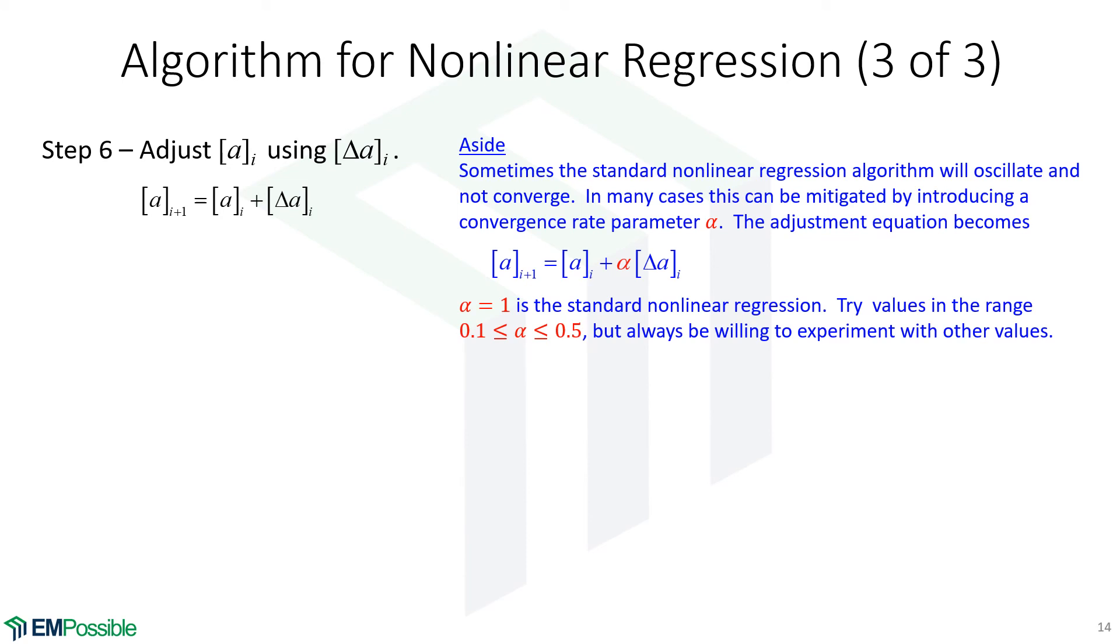I'll mention a sort of an aside that nonlinear regression can be a touchy method. It can suffer from convergence issues. It can even oscillate and be unstable. So I might even say it should be standard practice to introduce some sort of convergence rate parameter alpha here. And a value of one reduces this to the standard nonlinear regression algorithm. When it's unstable, very often you can mitigate this by choosing a smaller value of alpha than one. I tend to first try values within the range 0.1 to 0.5. For whatever reason, 0.1 always seems to be the first thing I try. Of course, that'll converge a little bit slower than a value of 0.5, but it's also possible that 0.5 won't converge. But that's where I tend to start. I'll experiment with that a little bit.